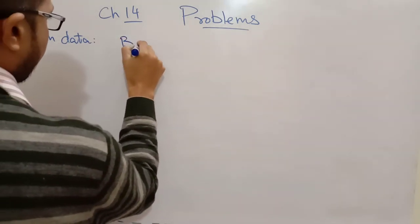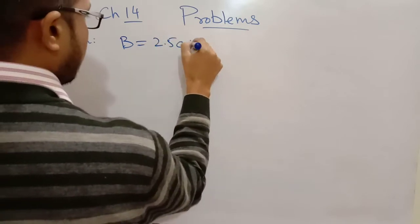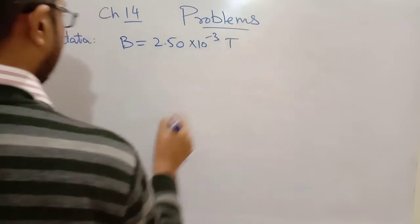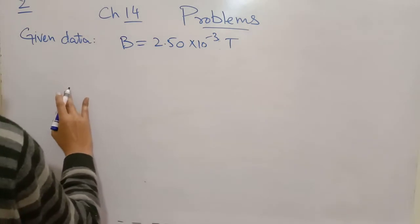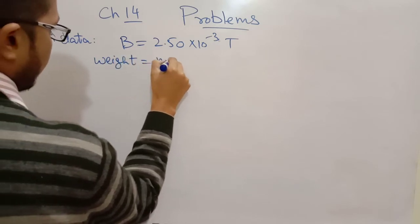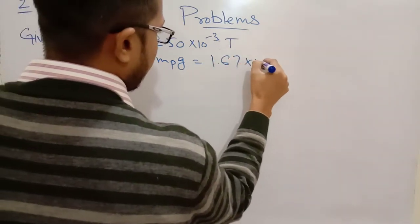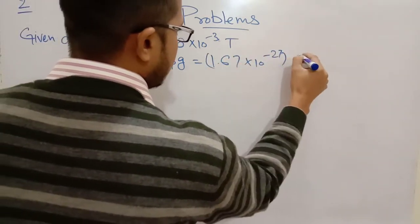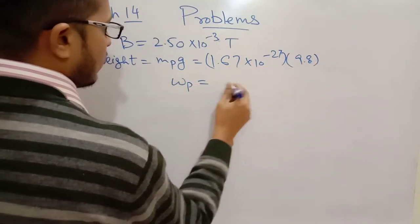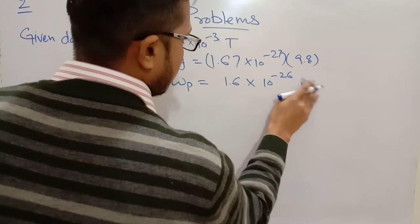B is equal to 2.50×10⁻³ tesla. This is the magnetic field B. Mass of proton is 1.67×10⁻²⁷ kg, and weight is equal to 1.6×10⁻²⁶ newtons.